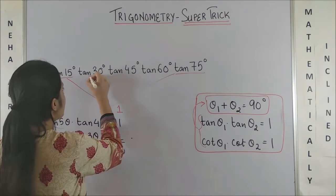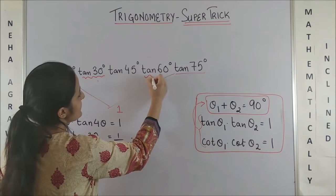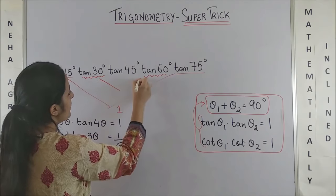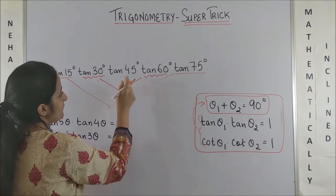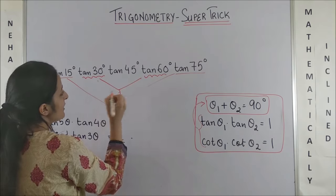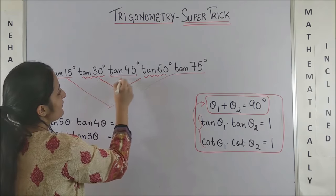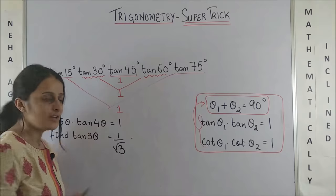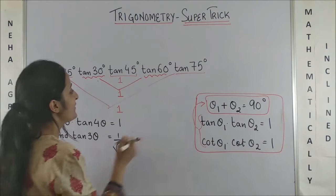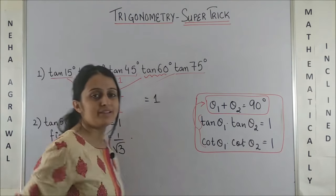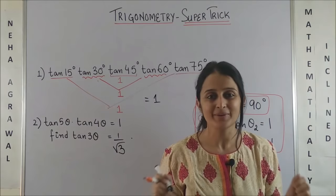Likewise, my tan 30° and tan 60° would also add up to give you 90 degrees and thus the product is 1, and tan 45° we anyway know is 1. So, 1 × 1 × 1, the answer was simply 1. Wasn't this super quick and easy?